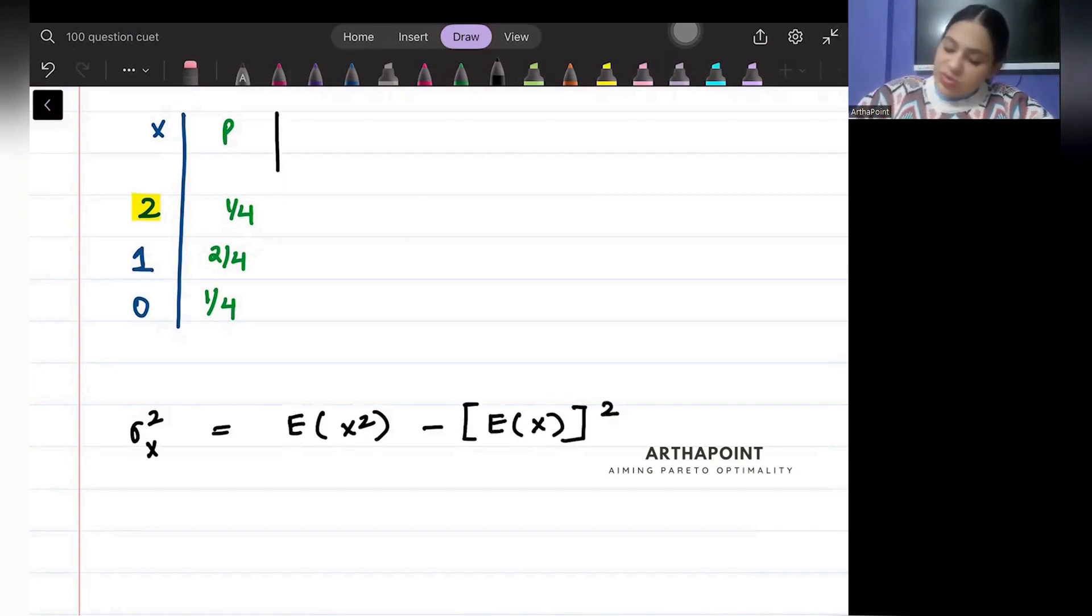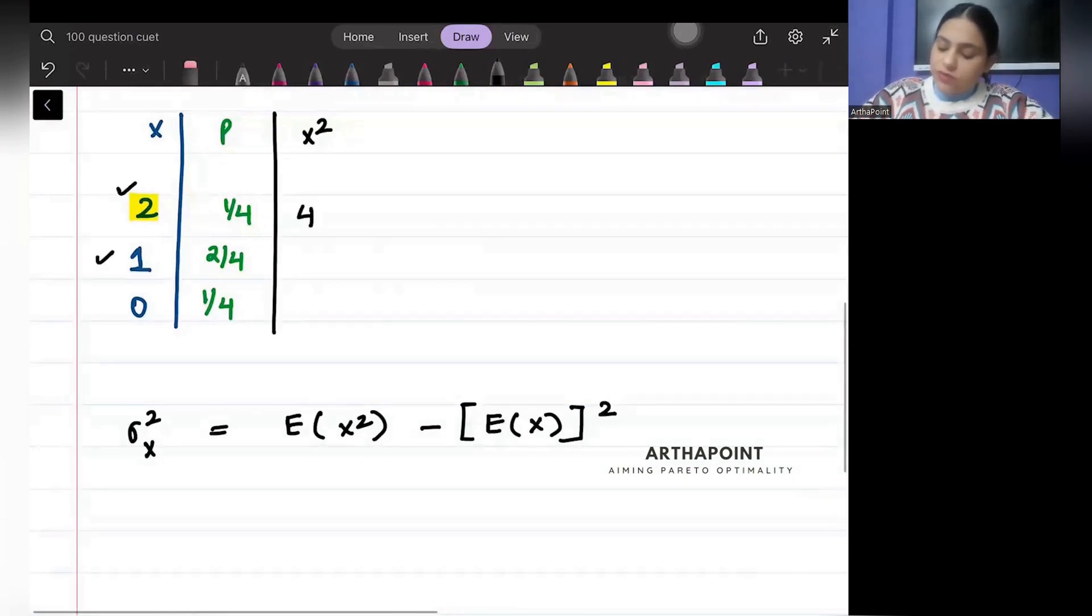So what will x² be? x² will be: two squared is four, one squared is one, zero squared is zero.